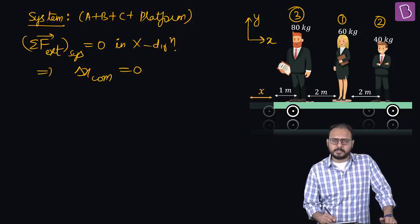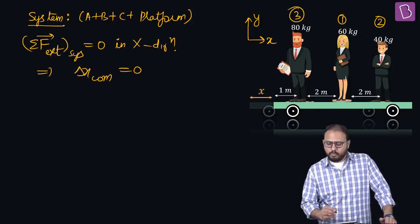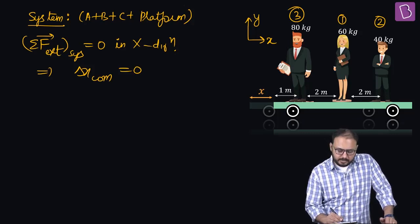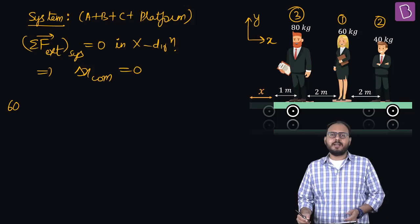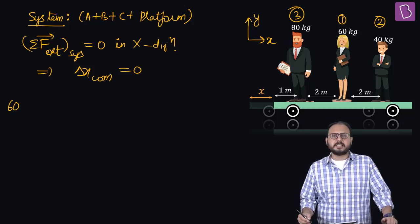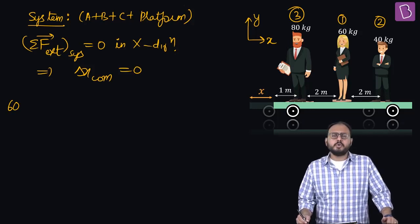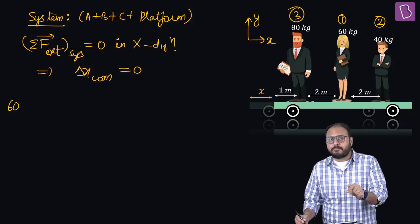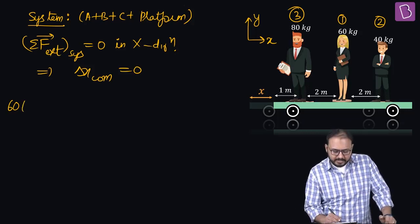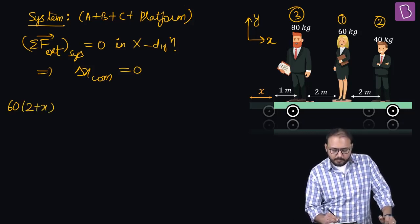Start with the first person. The lady moved two meters to the right, so m1 delta x1. M1 is 60 kg. What is the displacement of the lady? Two meters to the right is on the platform. The platform also moved x, so 2 plus x.